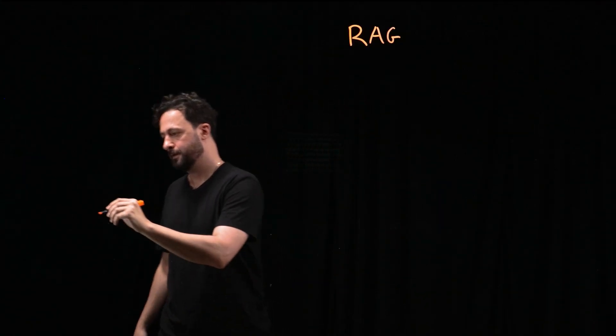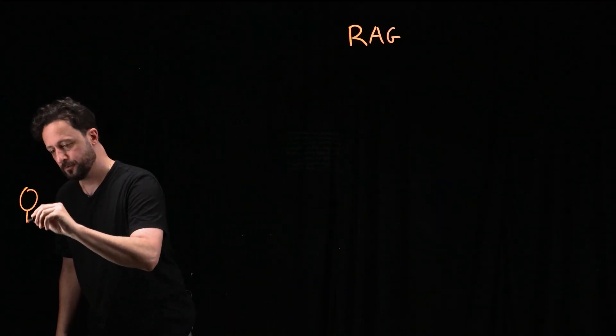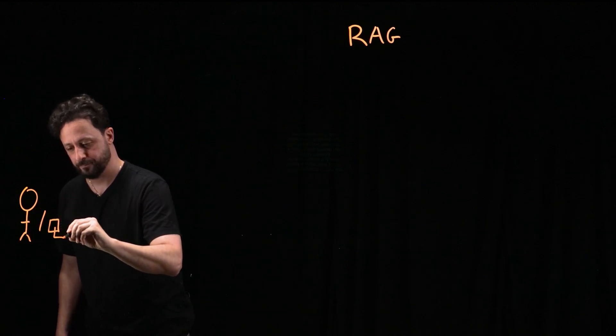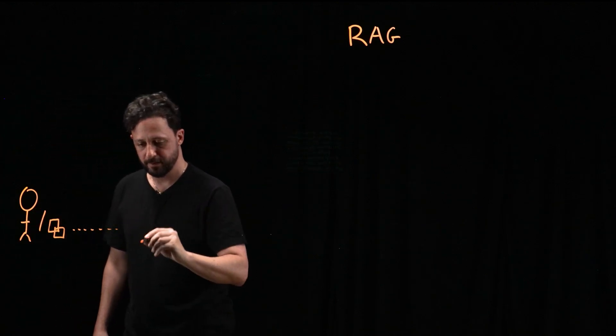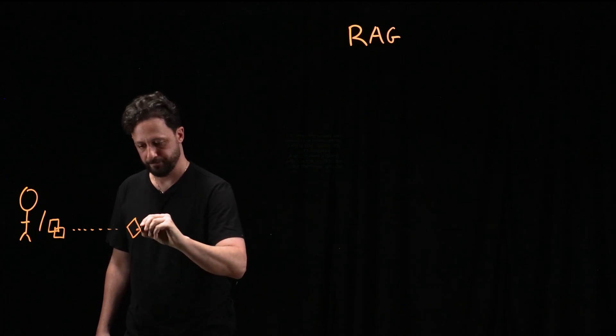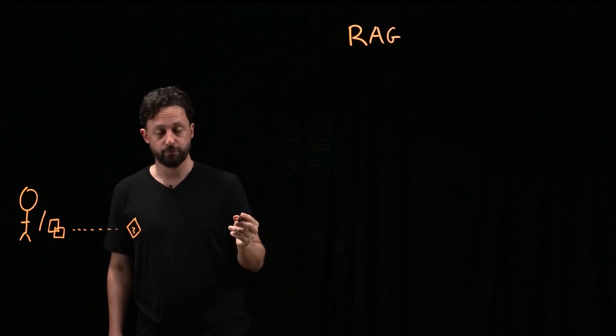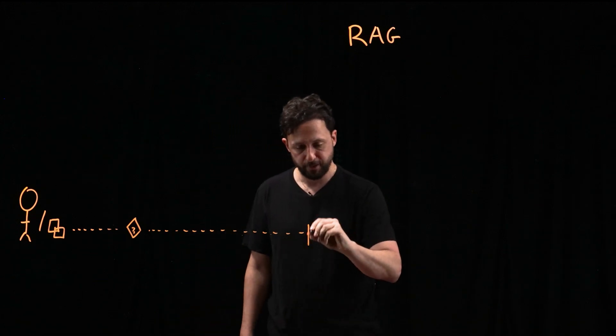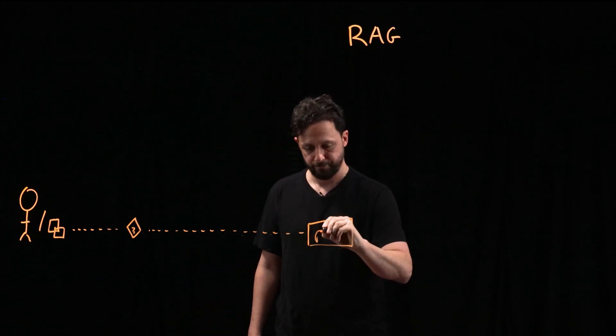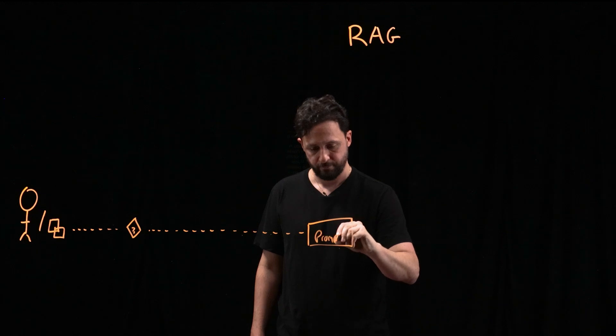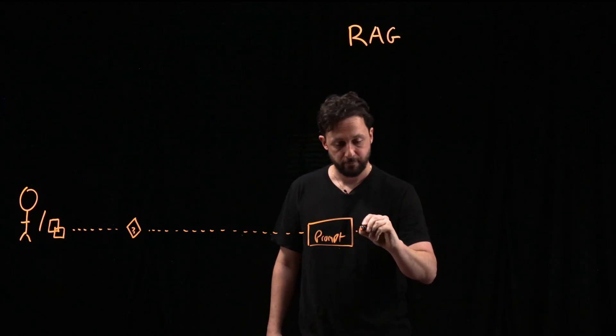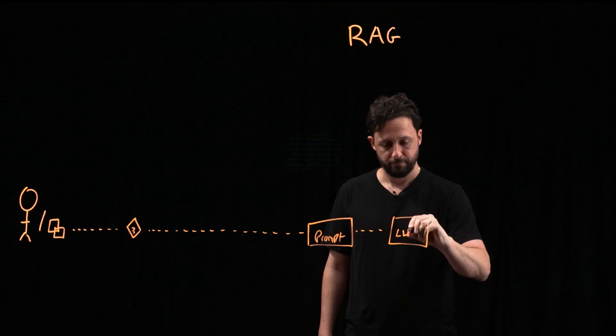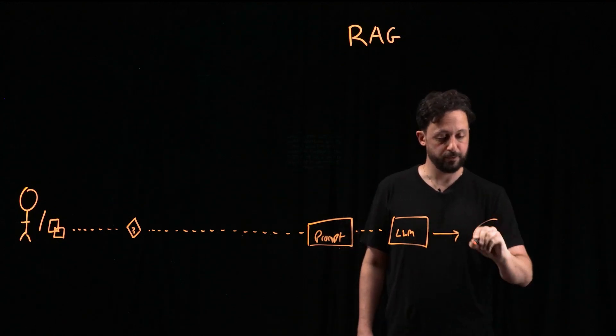Let me quickly sketch it out. So let's say we have a user, or an application even, and they send a query. Now without retrieval augmented generation, this query is going to go and get itself interpolated into a prompt. And from there, that's going to hit the LLM and generate an output.